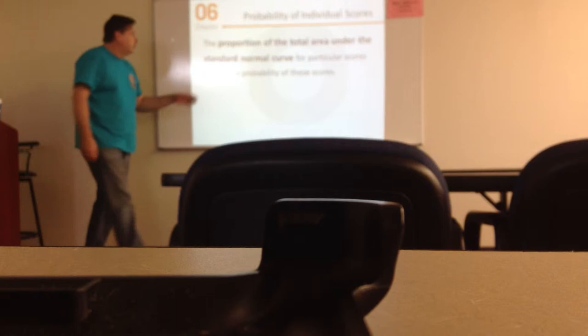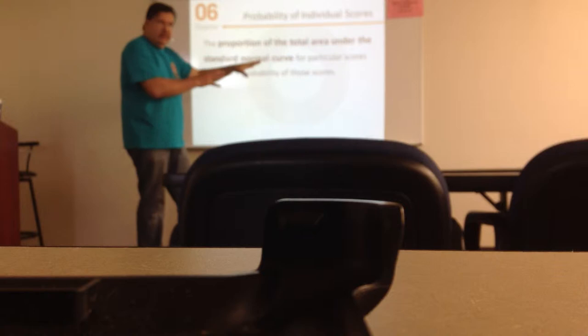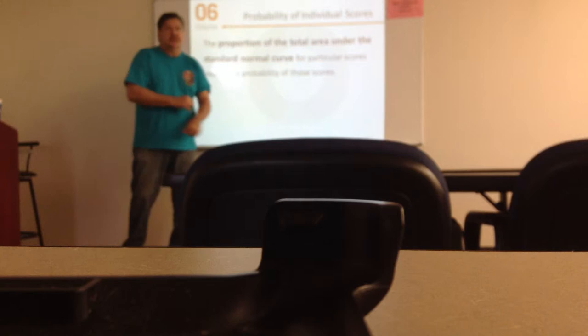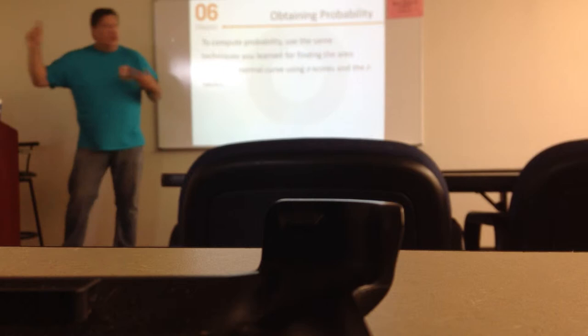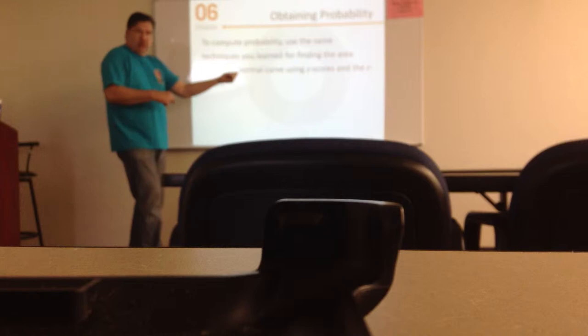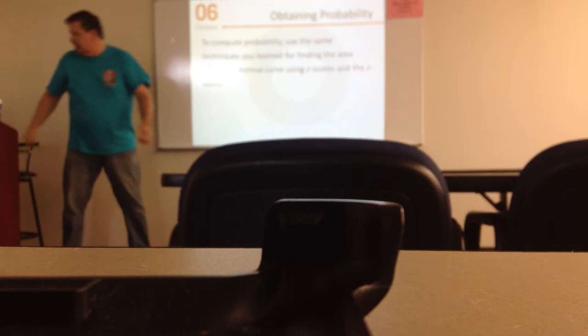Obtaining probability from the standard normal curve — the proportion of the total area under the standard normal curve for particular scores equals the probability of those scores. There's a 95% probability that scores are going to fall between plus and minus three standard deviations from the mean. To compute the probability, use the same technique for finding the area under the normal curve, which we went over last video, using z-scores and the z-tables.